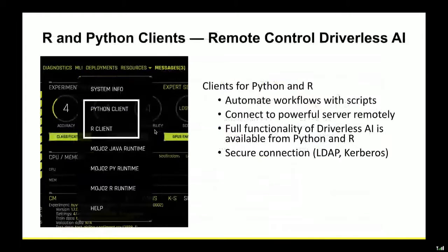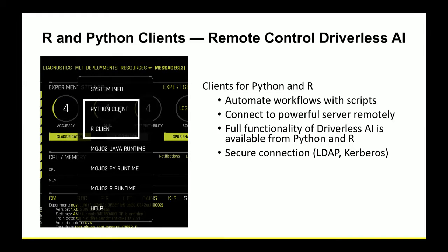We have R and Python clients, so you can connect to Driverless AI from a laptop with an R or Python session and say, download this file from Hadoop and run this experiment, while a server with four GPUs on Amazon does the work. You don't have to click in the GUI if you prefer scripting. Python was the first-class citizen — everything in the product is written in Python, both the APIs and the backend. But everything is automatically translated to R as well.